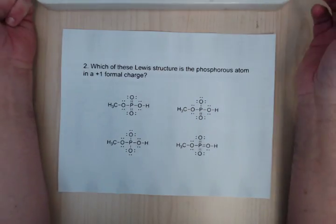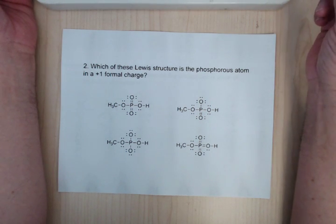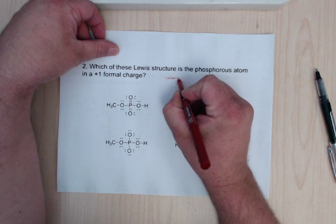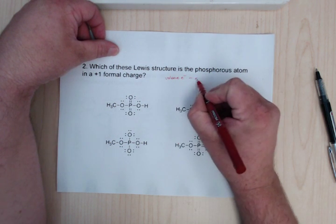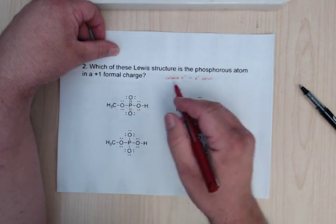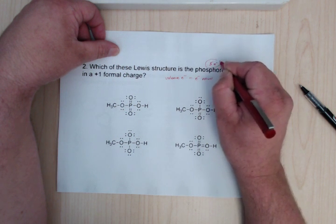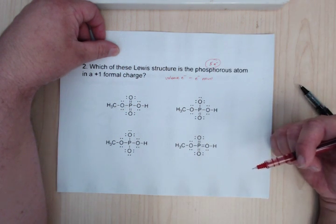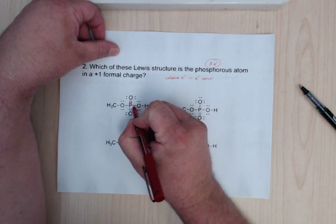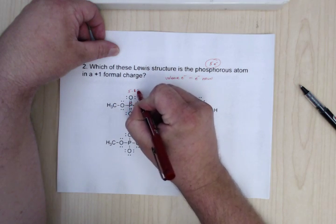So for this one, which Lewis structure does the phosphorus have in a plus 1 formal charge state? So again, we're going to do valence electrons minus electrons owned. So for this one, phosphorus typically has five valence electrons because it's right below nitrogen.